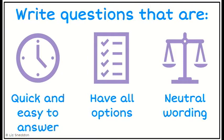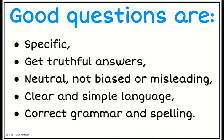We want them to be quick and easy for people to answer — the quicker and easier they are to answer, the more likely we are to collect more data. We want to make sure that all of the options are covered so that everyone can give us an answer, and we want to keep the wording neutral so that we're not collecting biased data. So questions will be quite specific so we won't be left trying to figure out what they mean, and we want to be able to get truthful answers. We don't want biased or misleading questions, and we want to use clear and simple language — not complicated language not everyone will understand.